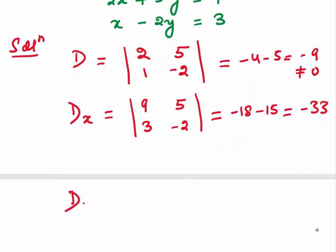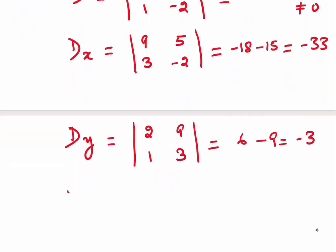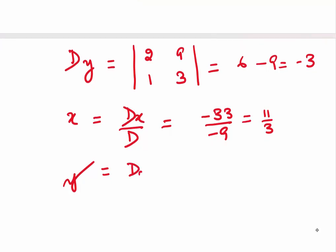Now let's find the other determinant where we replace the coefficients of y. The coefficients of x — 2 and 1 — remain as they are, and we replace 5 and minus 2 by the right-hand side and find the value of the determinant. This would be 6 minus 9, which is minus 3. So we now have both dx and dy and the main determinant. x would be dx divided by d, which is minus 33 divided by minus 9, giving us 11 by 3 as the x value. And the y value would be dy divided by d, which is minus 3 divided by minus 9, and that is 1 by 3.